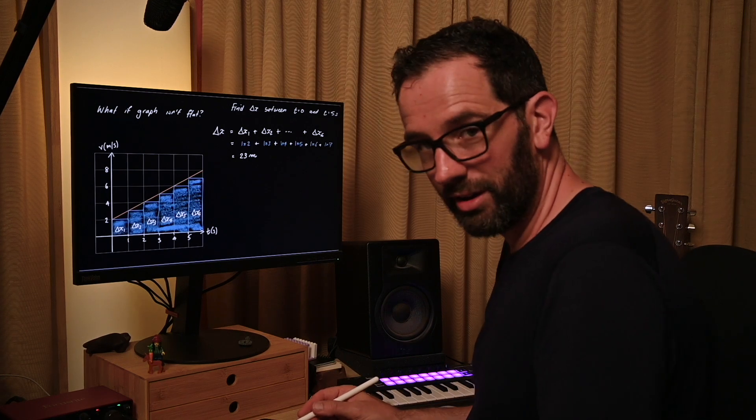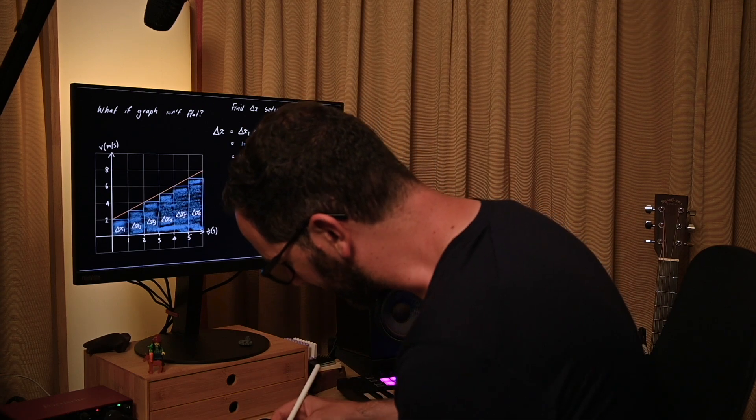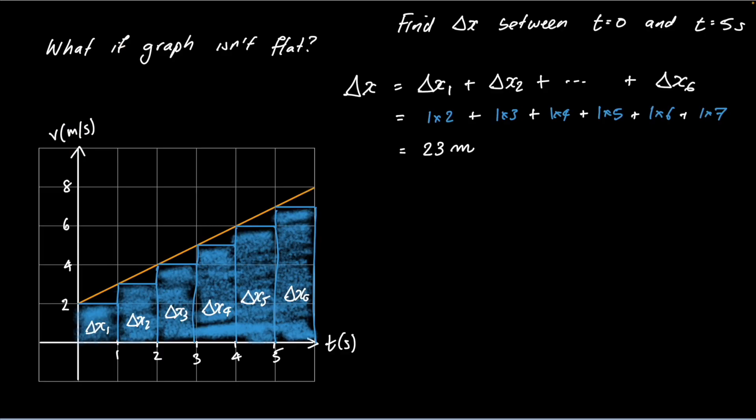If you imagine we do the same thing again, but instead of having the divisions we just did, imagine we divided it up much finer. Imagine we did a staircase where we were going up twice as often. We'd get a little bit more extra area because our rectangles get taller a bit faster. If we did it again and jumped up every quarter of a second, you can see that if we take this process to having a really large number of very narrow rectangles.